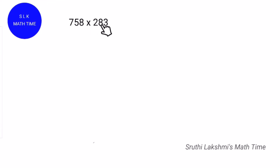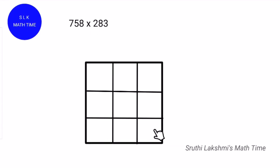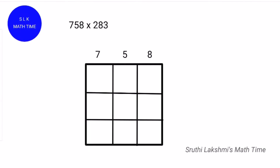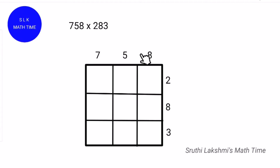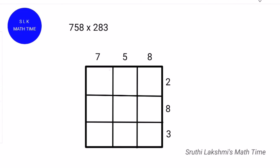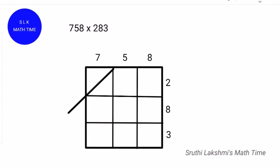Let's see another example: 758 into 283. Put a 3 by 3 grid because we are multiplying two 3-digit numbers. Write 758 like this and 283 like this. Next, put diagonal lines like this.